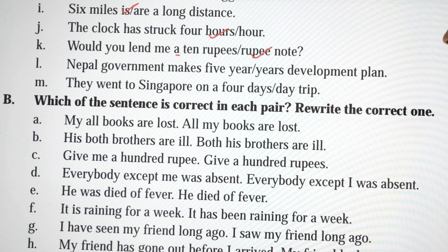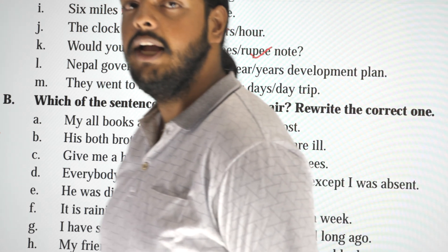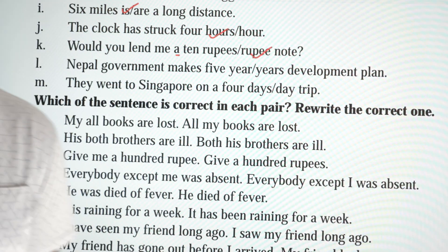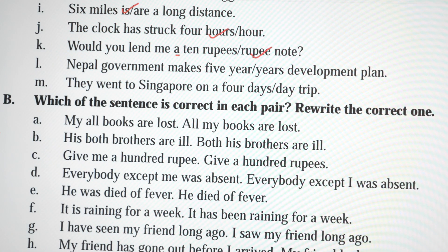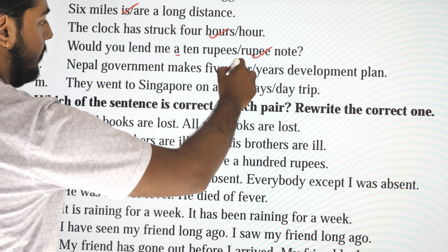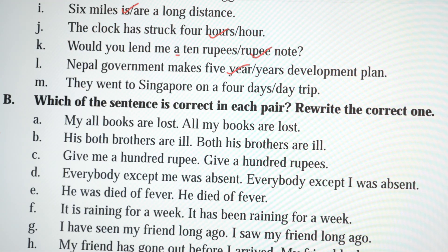The government makes a five year development plan or five years development plan? Collectively, like 5 years they have a plan, that's why: five year development plan.